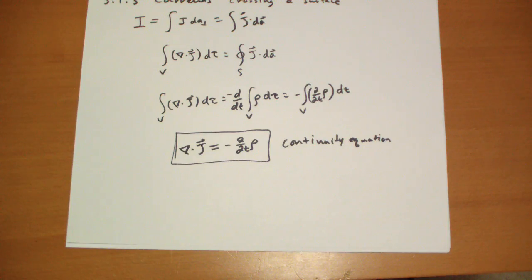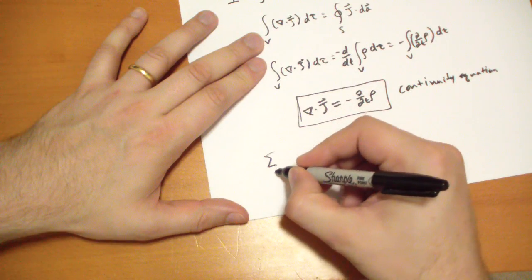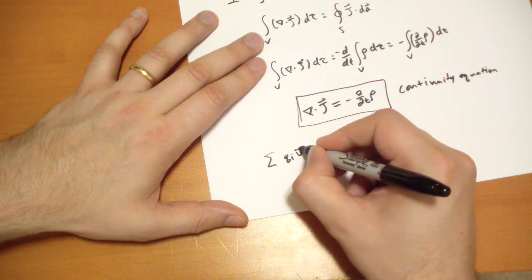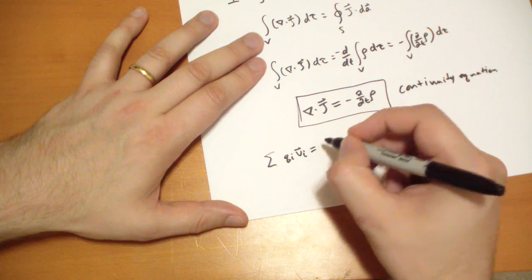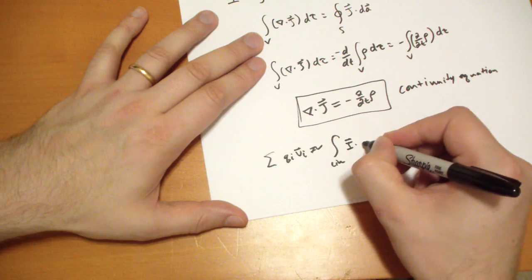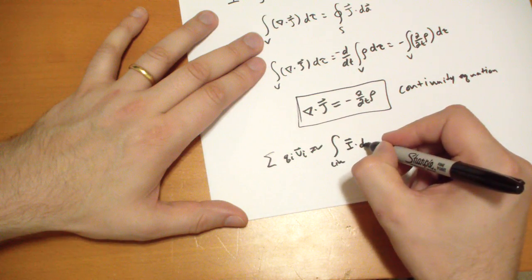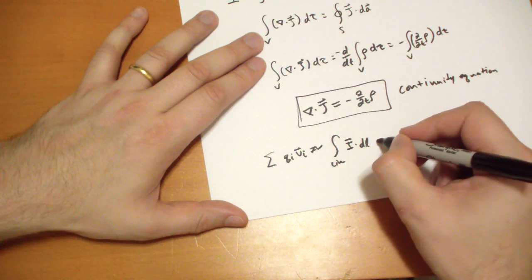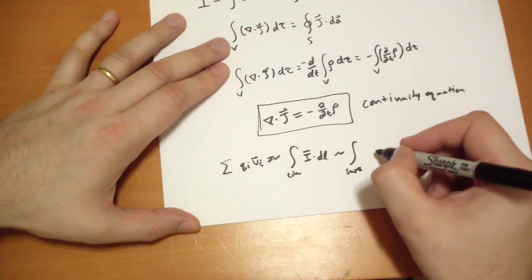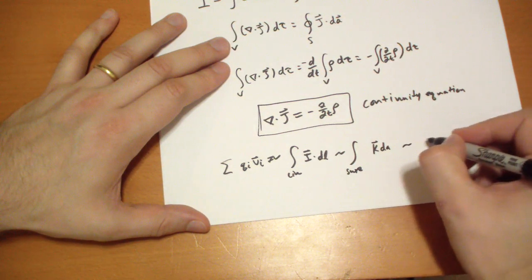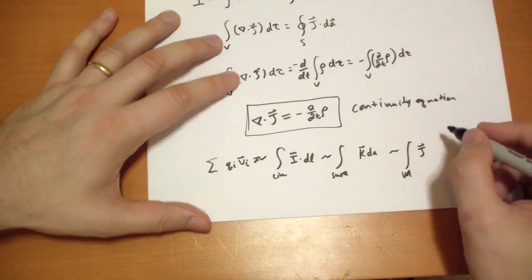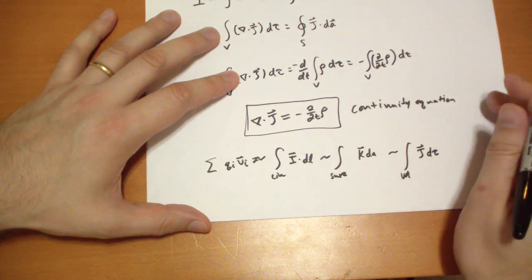Wanted to summarize because they do it in the book and it's kind of useful. So here's basically all the analogs. So sum of qi times the velocity of i is similar to the line integral of I vector dl. Idl is similar to the surface integral of K vector dA, is similar to the volume integral of J d tau.